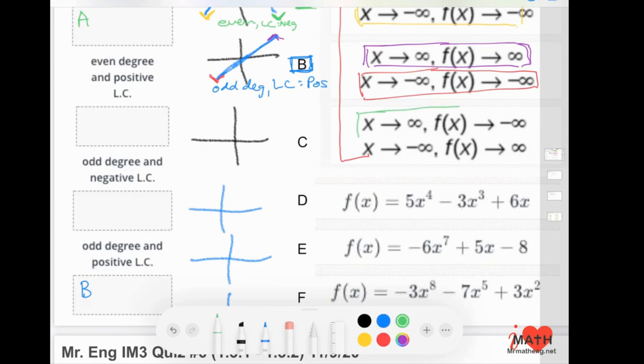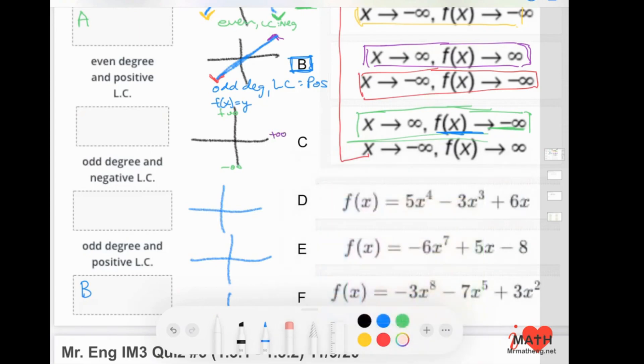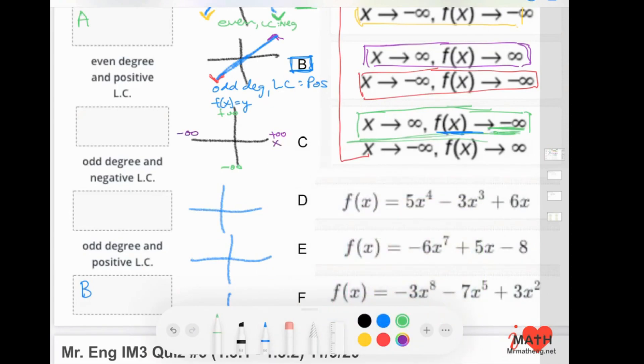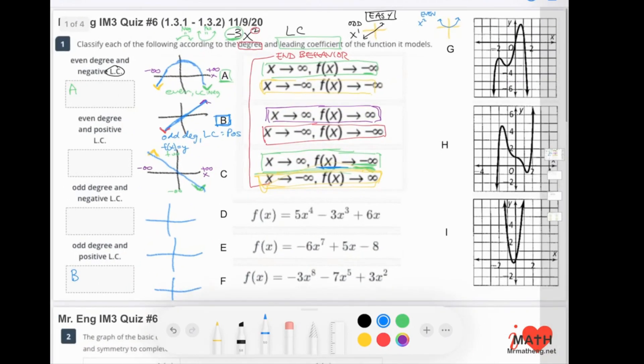Let's do the next one. As x goes towards the right, the f of x—if I haven't clarified, the f of x, this part is the y-axis. In this problem, it's saying that you're going negative infinity. In green, this is saying that the graph goes this way. And then over here, as x approaches negative infinity, f of x goes towards, so as I go towards the left, it's going up like this.